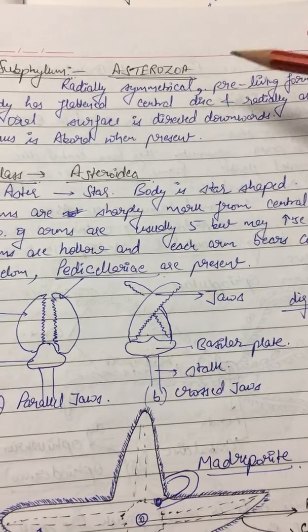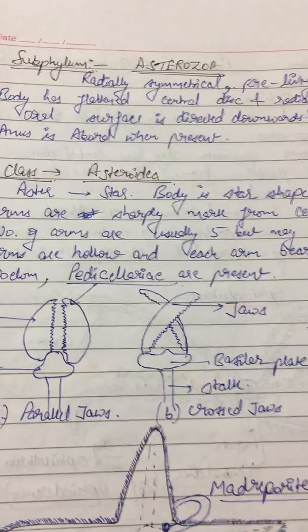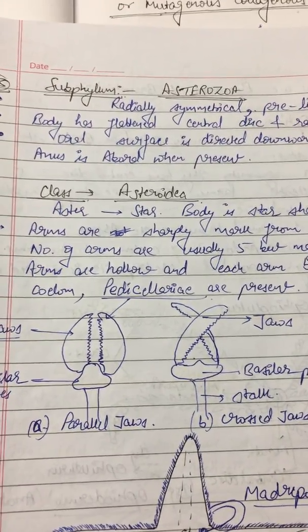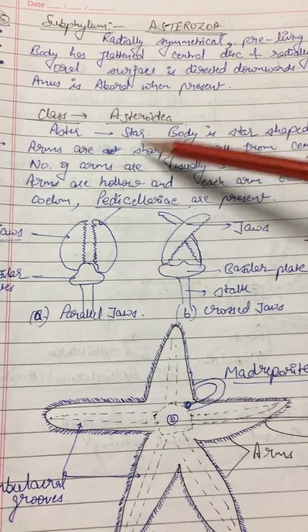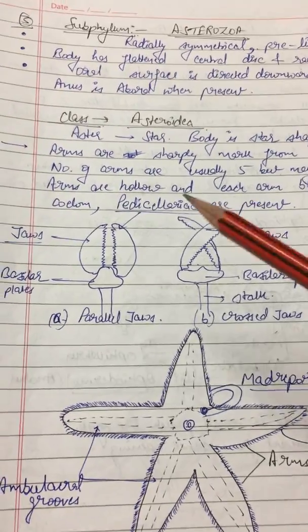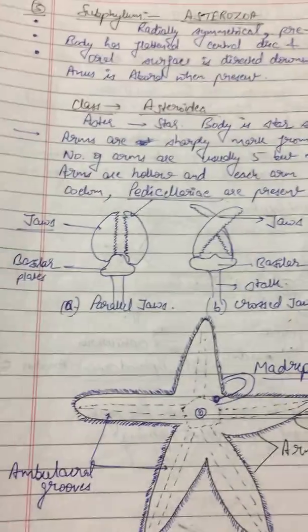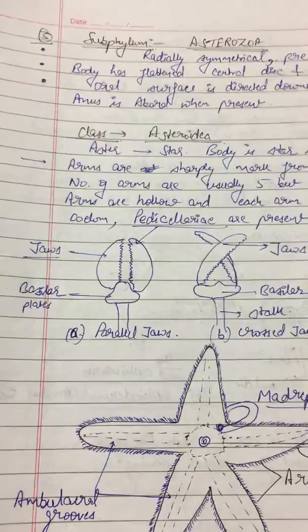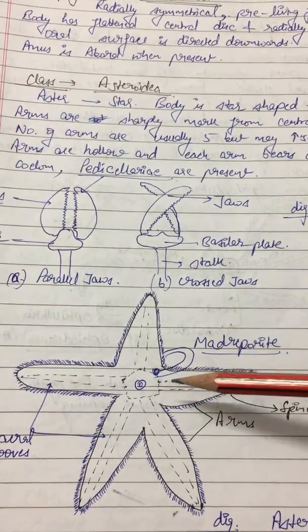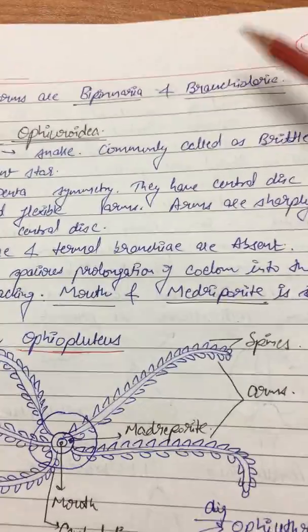The subphylum Asterozoa shows radial symmetry. The body has a flattened central disk with regularly arranged arms. The oral surface is directed downwards, meaning the mouth faces downward, and the anus is aboral when present. Class Asteroidea have star-shaped bodies. The number of arms is usually 5 but can be more. They have pedicellaria, which can be parallel jaws or cross jaws — these have a stalk, a basilar plate, and jaws. Pedicellaria function in capturing food, defense, and cleaning the body. Their larval forms include Bipinnaria and Brachiolaria.